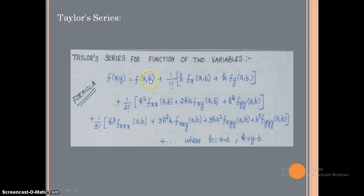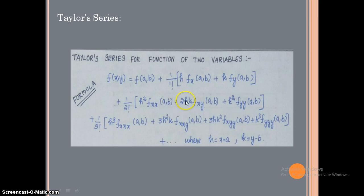Here a and b are the given points in the problem. To remember the formula: h corresponds to x and k corresponds to y. So h maps to fx, k maps to fy. If h² appears, take f_xx; if k² appears, take f_yy; and if hk appears, h is represented by x and k by y, giving f_xy.